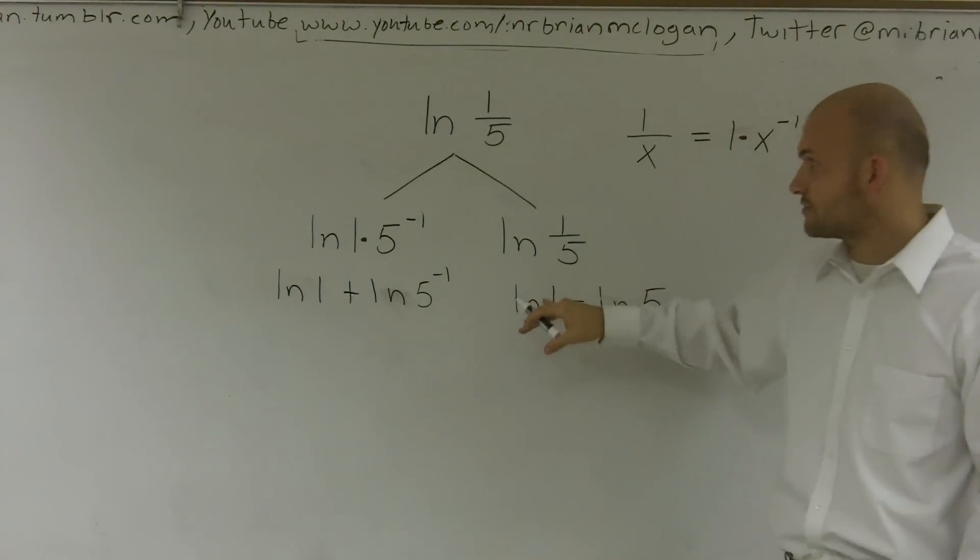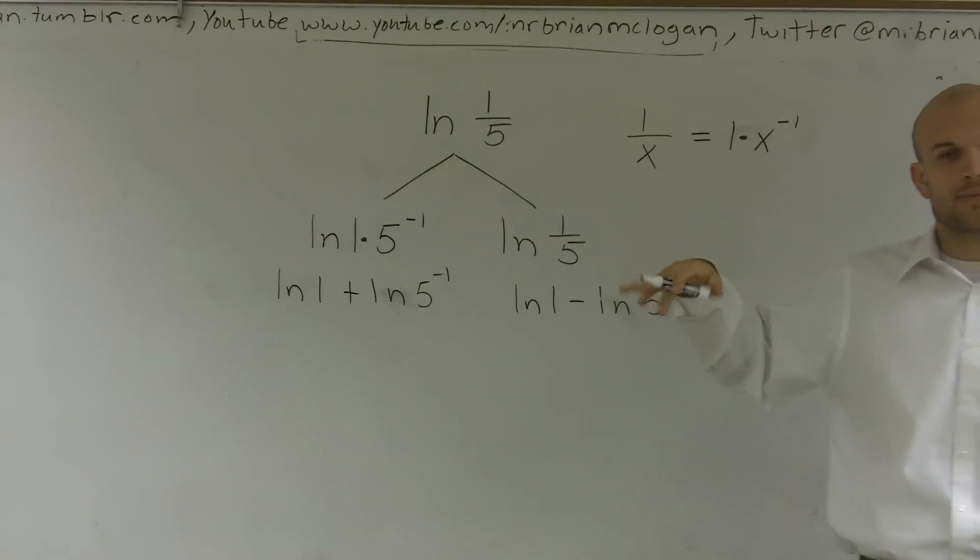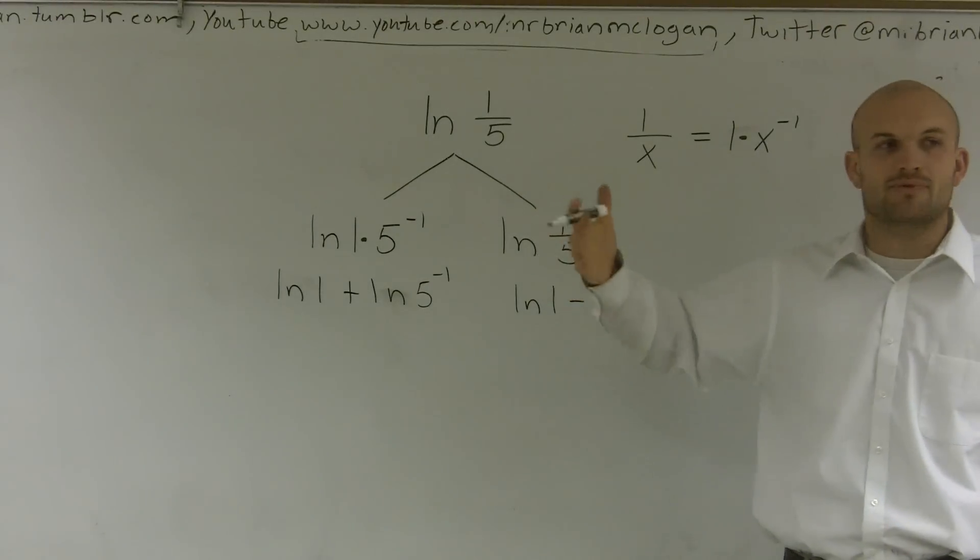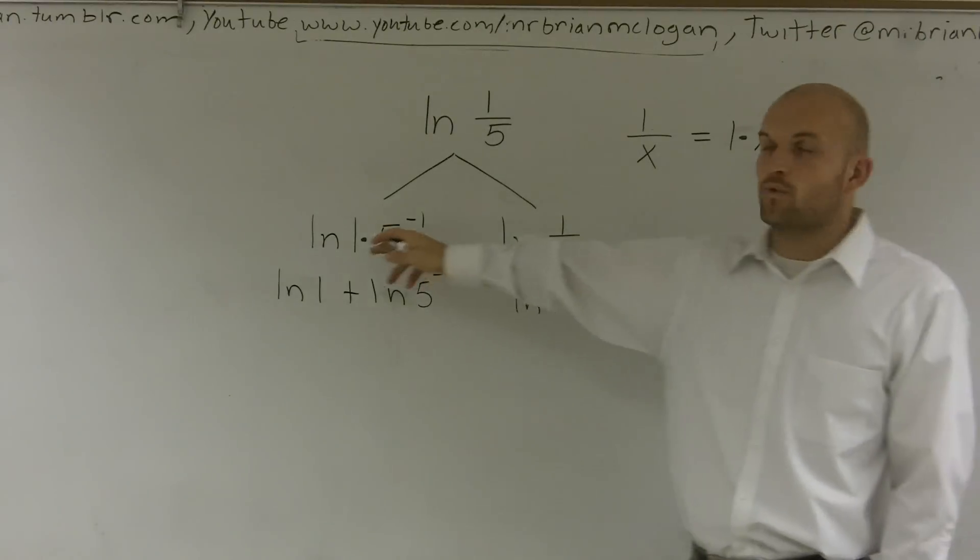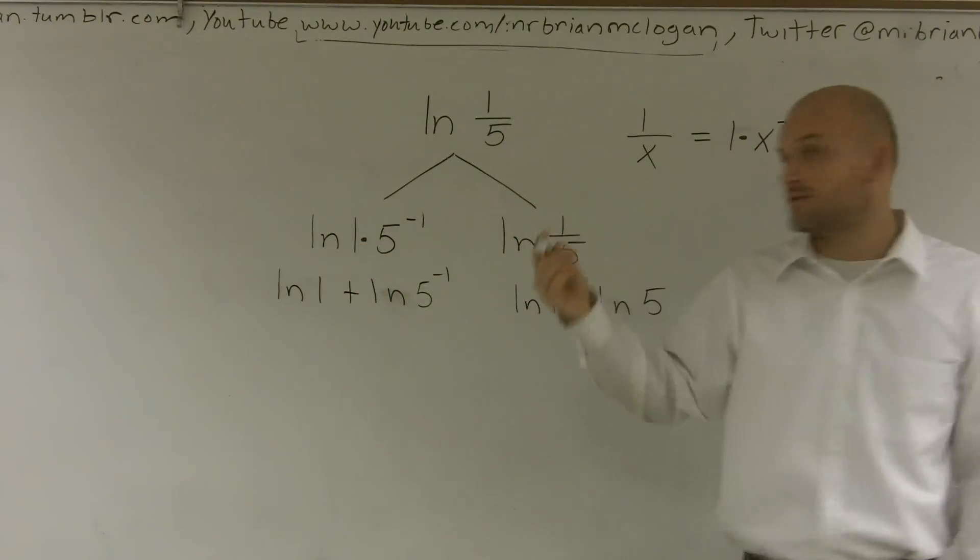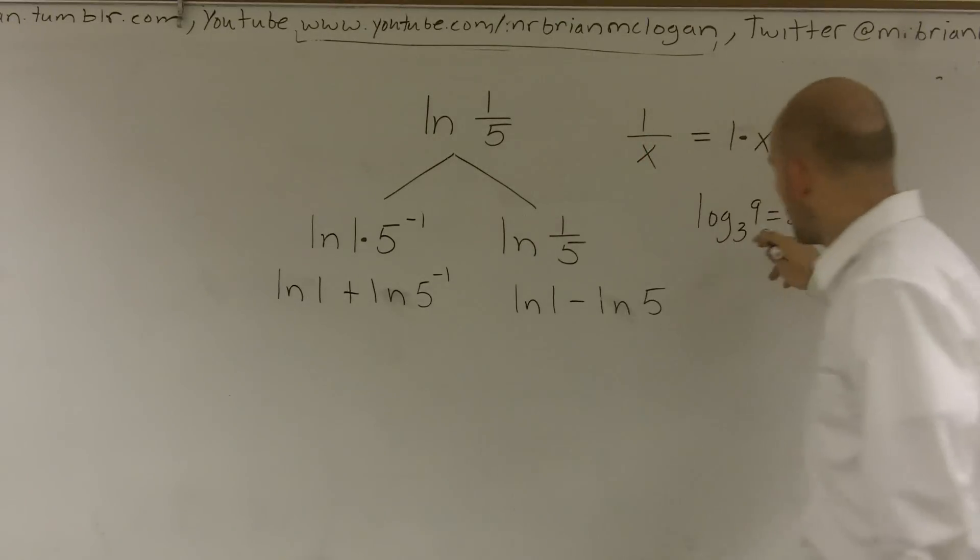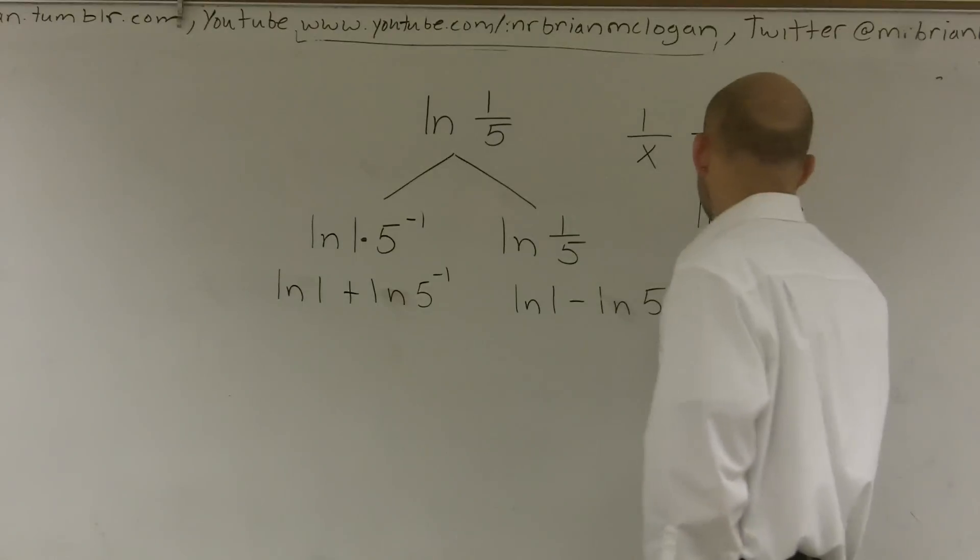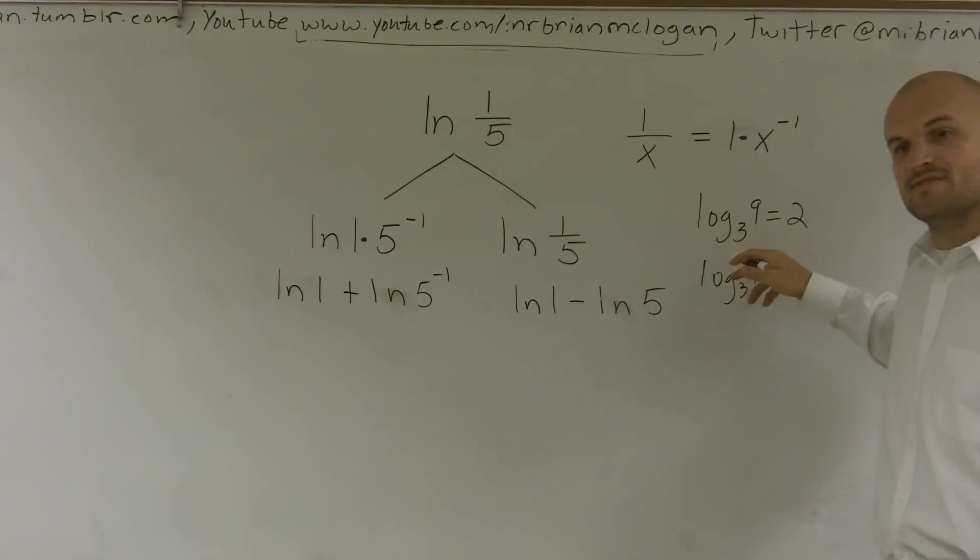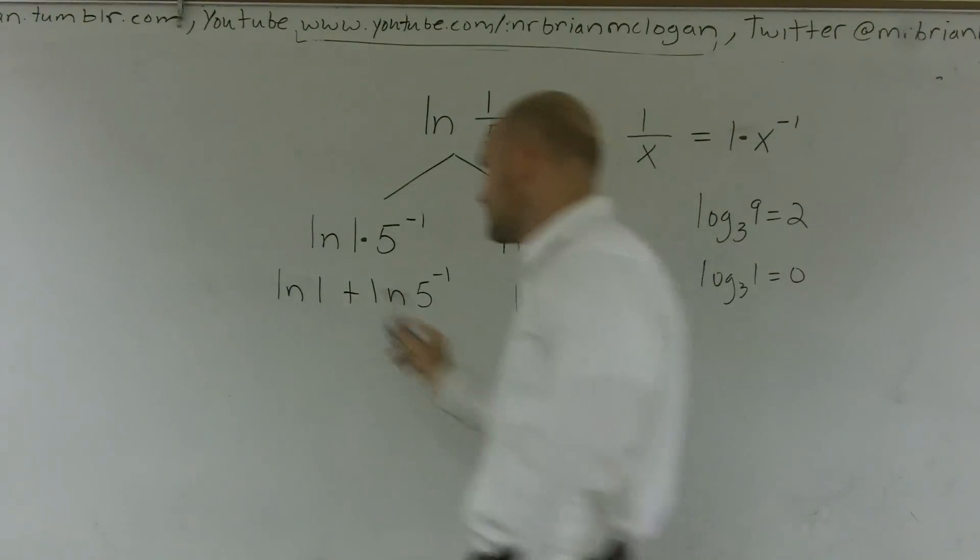Any logarithm, either natural or regular logarithm, whenever you're evaluating logarithm of 1, your answer is going to be 0. Because think about it this way. Log base 3 of 9, that answer is 2. 3 raised to what number gives you 9? 2. Well, log base 3 of 1 equals 0. 3 raised to what number gives you 1? 3 to the 0 power gives you 1. So any logarithm evaluated for 1, no matter what the base is, is always going to give you 0.